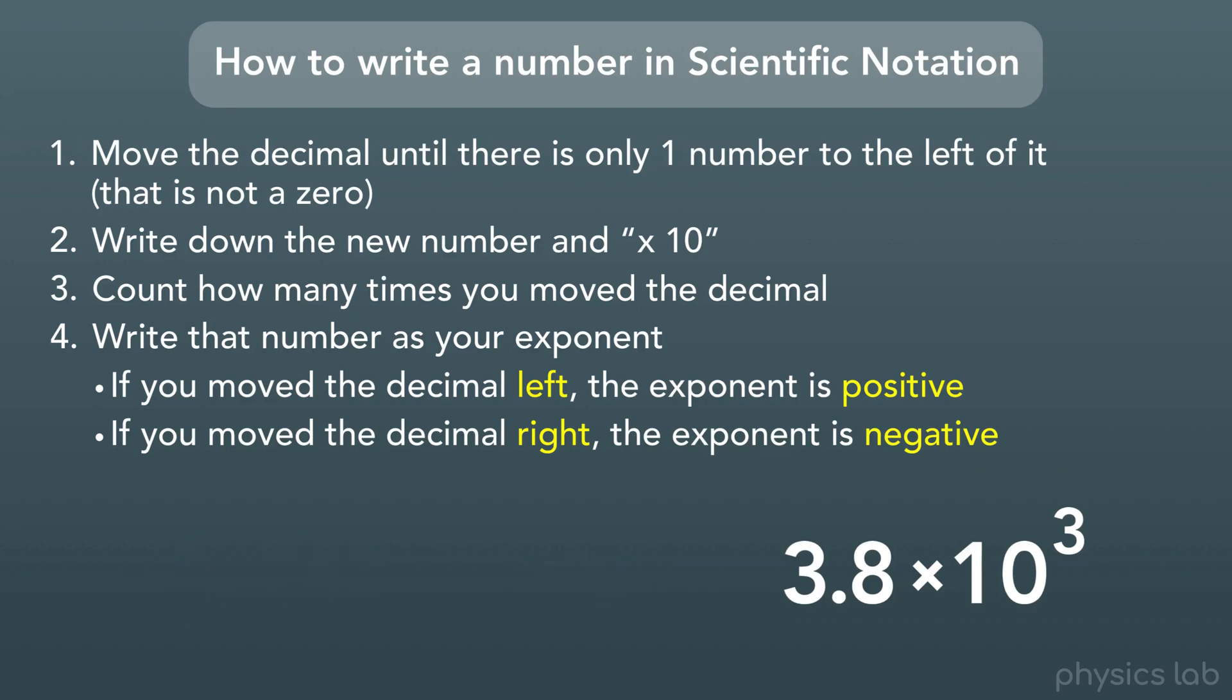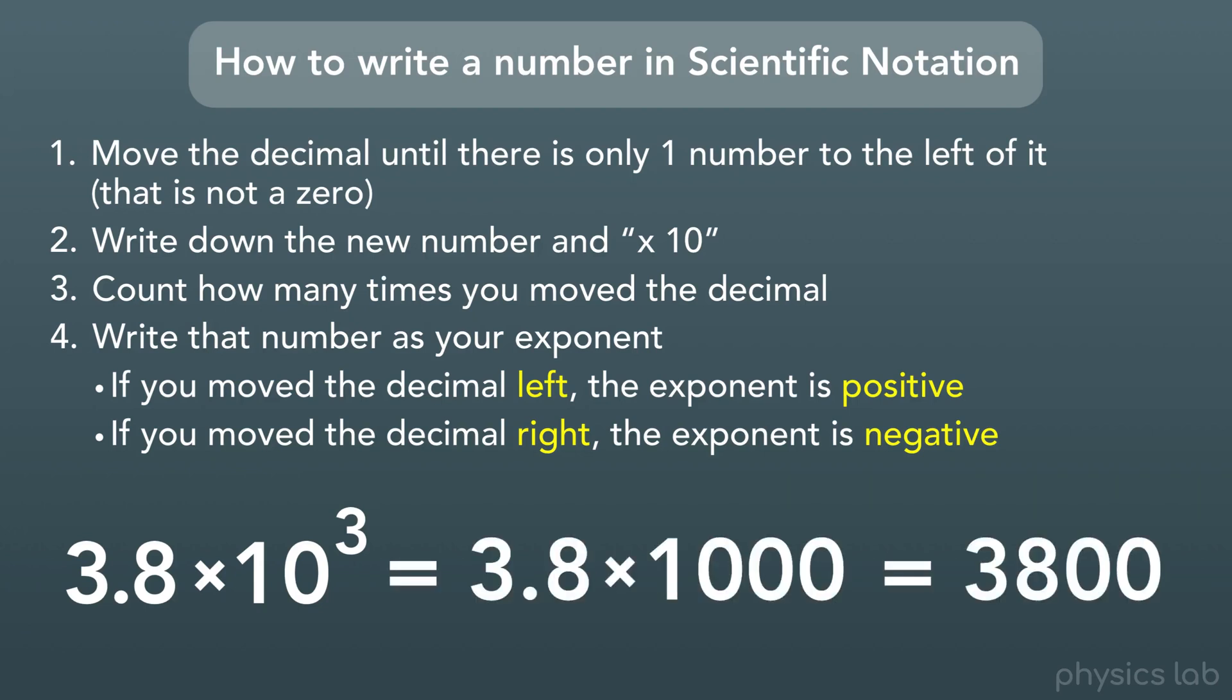This one was pretty simple, but there's a quick way we can check to make sure we did it right. All we need to do is multiply 3.8 times 10 to the third and see if we get our original number. 3.8 times 1,000 equals 3,800, which is our original number, so we know we did it right.